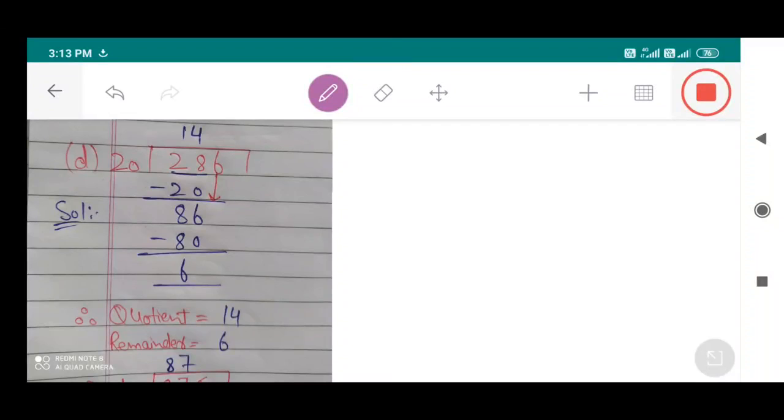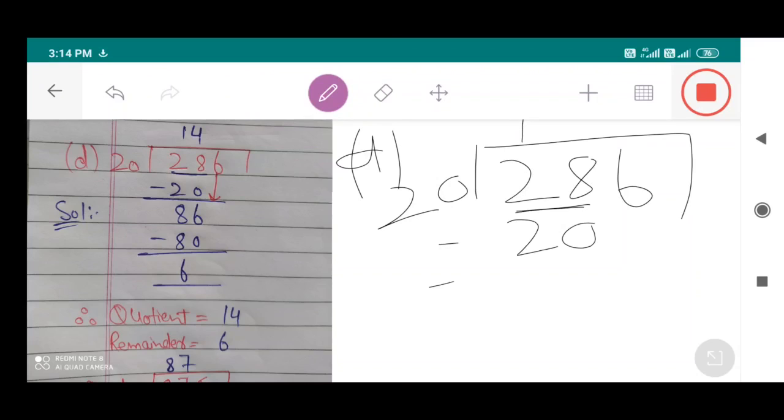Part number D: 286 divided by 20. Let's take 28 because 28 is greater than 20. 20 multiplied by 1 equals 20, leaving 8, and this 6 goes down.